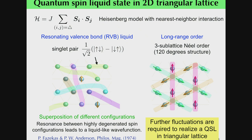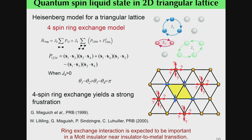The quantum spin liquid state for two-dimensional triangular lattices in the Heisenberg model was proposed by Fazekas and Anderson, by considering the resonating valence bond state. The resonance between different configurations of superpositions leads to a spin-liquid-like wavefunction, yielding the quantum spin liquid state. However, later it was shown that even in the presence of quantum fluctuations, conventional long-range order with 120-degree structure is more energetically preferable. Therefore, to achieve a quantum spin liquid state in Heisenberg triangular lattices, we need further frustrations. It has recently been shown that a ring exchange model provides further frustrations in this triangular system, and this ring exchange interaction becomes important when the system is a Mott insulator near the Mott insulator-to-metal transition.